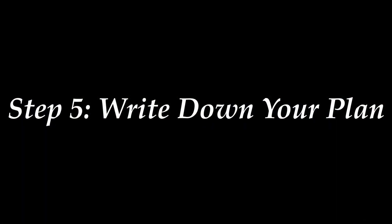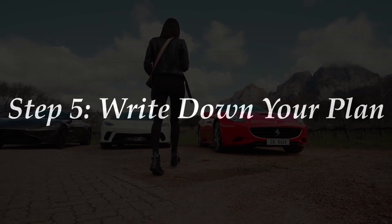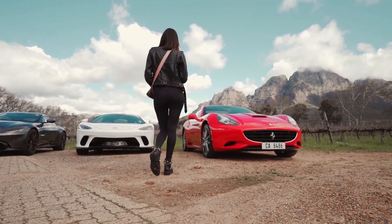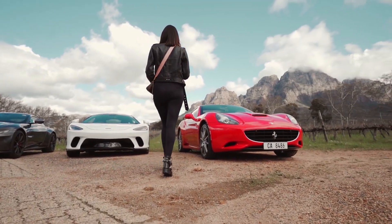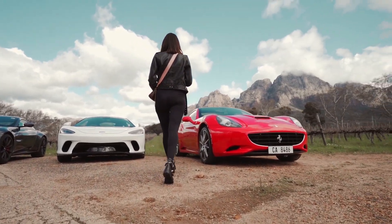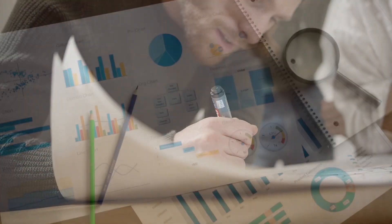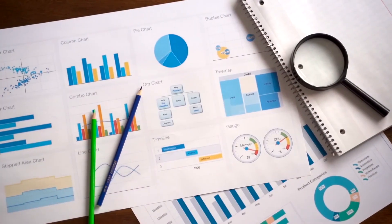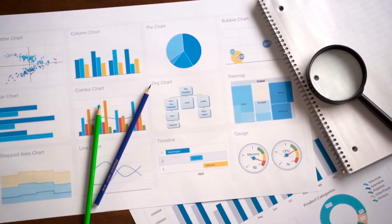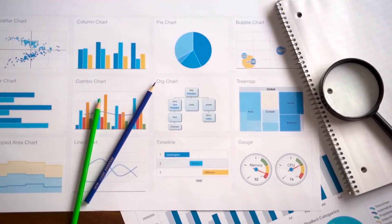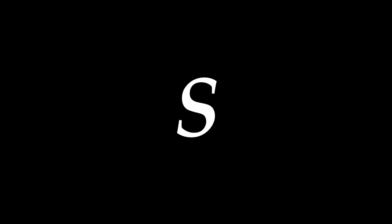Step 5: Write Down Your Personal Growth Plan. For your personal development, it's essential to determine what success looks like and put a plan in place. Remember, making your goal specific, measurable, attainable, relevant, and time-bound is vital.